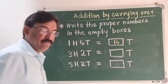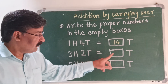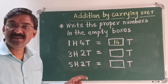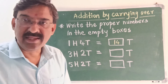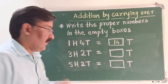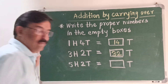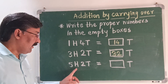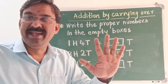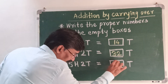300 plus 2 tens is equal to dash tens. 300 means 30 tens. 30 tens plus 2 tens: 31, 32 — so here you have to write 32. 500 plus 2 tens: 500 means 50 tens. 50 tens plus 2 tens equals 52 tens.